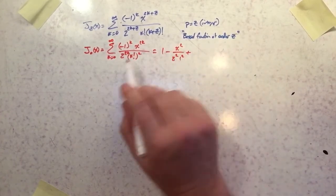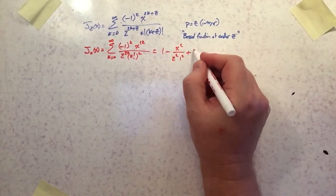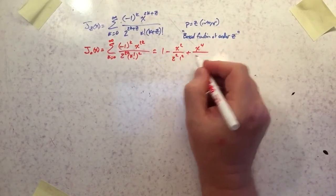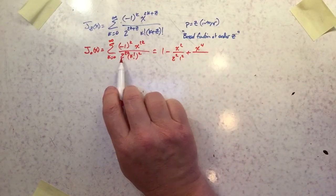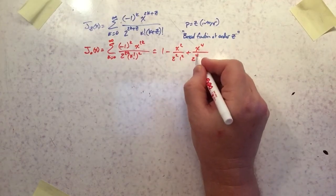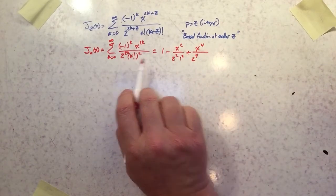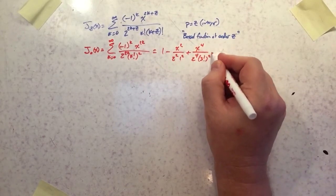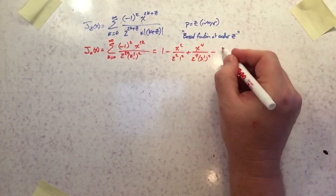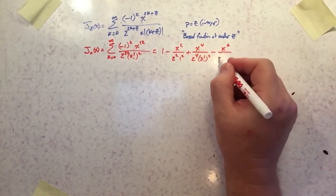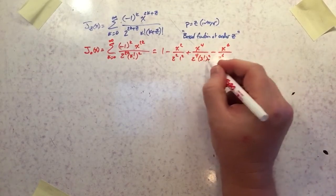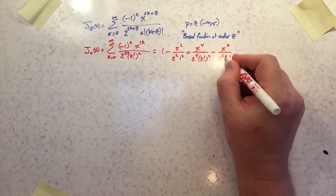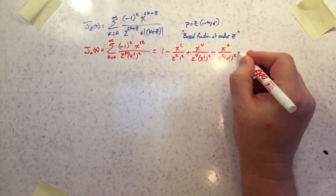The third term is x to the 4th and then the denominator we're going to have 2 to the 4th and then this will be 3 factorial squared. And then the next term is negative and it'll be x to the 6th divided by 2 to the 6th times 4 factorial squared. And then it goes on and on.